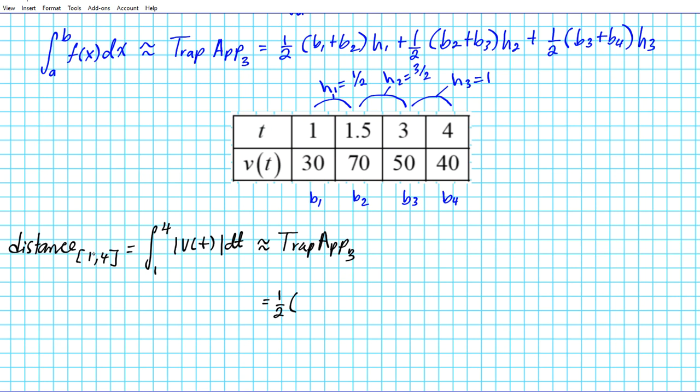Because these represent the velocity. So absolute value of 30 plus absolute value of 70 times the height, which is one half. Now if you notice in this particular problem, all the bases are positive. So the absolute value component is not going to make any difference.